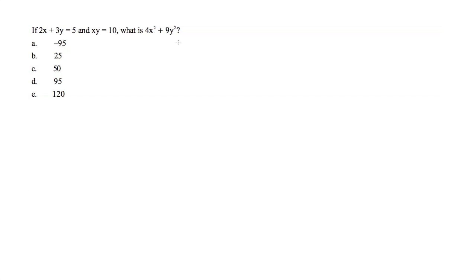Well, in this case, most of you automatically see 2x plus 3y equals 5, xy equals 10. You have a system of equations, you have two unknowns, so we can solve for x and y. We plug those values in here and here, and we can figure out what 4x squared plus 9y squared is equal to, right?